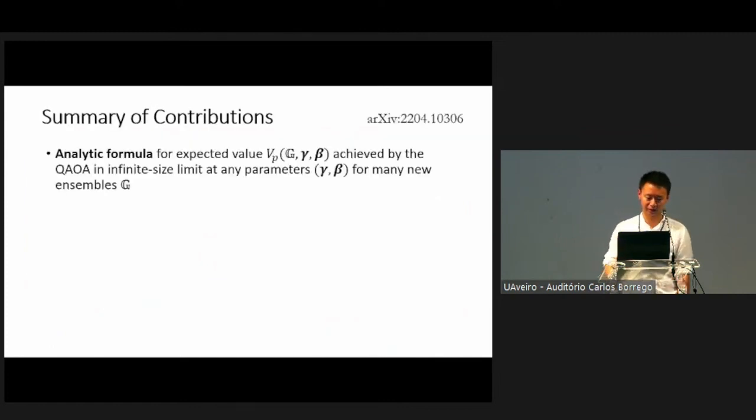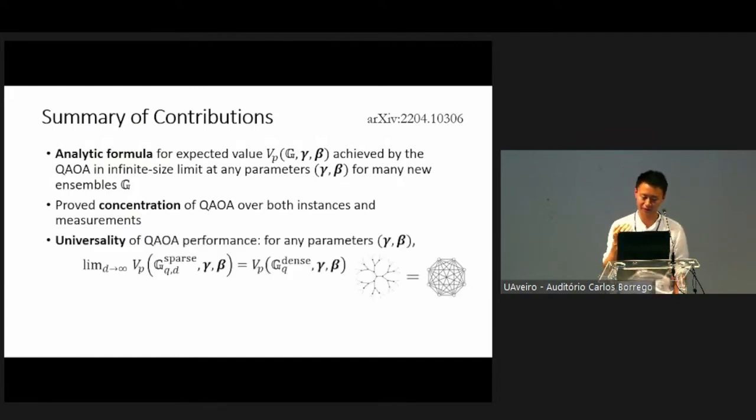So now I just summarize. I've given you a way to derive an analytical formula for expected values of the energy achieved by the QAOA in the infinite size limit at any parameters for many ensembles of combinatorial optimization problems. We're also able to prove concentration of QAOA over both instances and measurements. We also show a universality property of the QAOA performance, which shows that for many ensembles of combinatorial optimization problems, the energy output by the algorithm doesn't really depend very sensitively on the underlying distribution other than the first and second moment. In particular, you can show that the sparse and dense graphs have a very similar performance in the asymptotic limit.